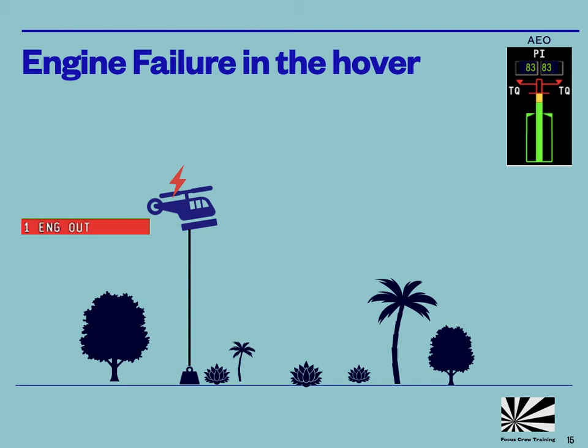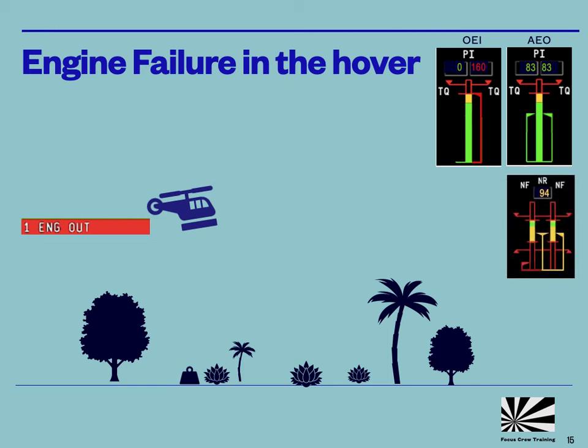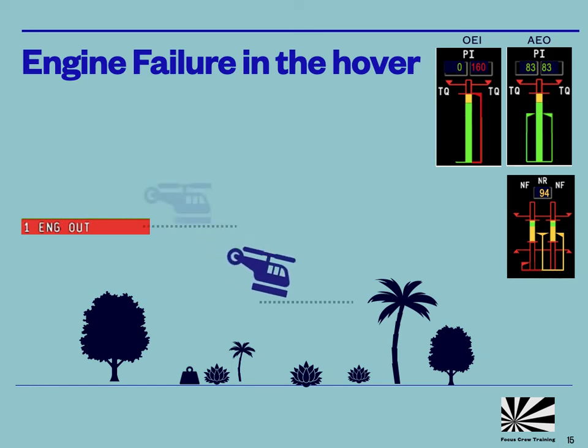In this situation, if one engine fails, the good engine can only supply 160 of the 166 percent required to maintain the hover. As a result, the rotor speed will start to decay and the helicopter will start to descend. During any attempt to fly away, the helicopter will inevitably experience a drop down before it reaches a speed at which it can climb away from the obstacles. So unless the helicopter was hovering at a sufficient height above the obstacles to start with, there is a real risk of collision.